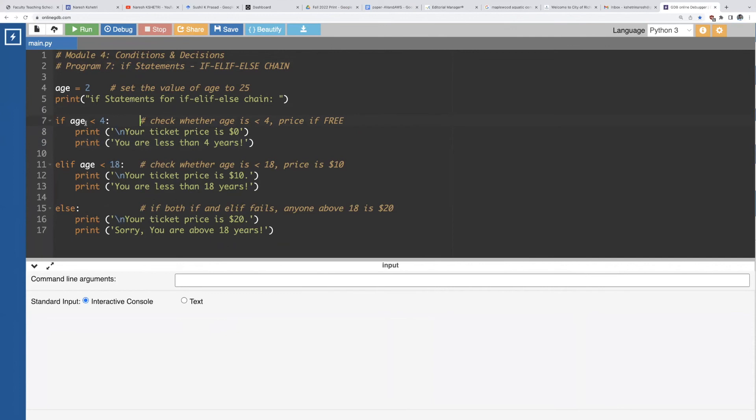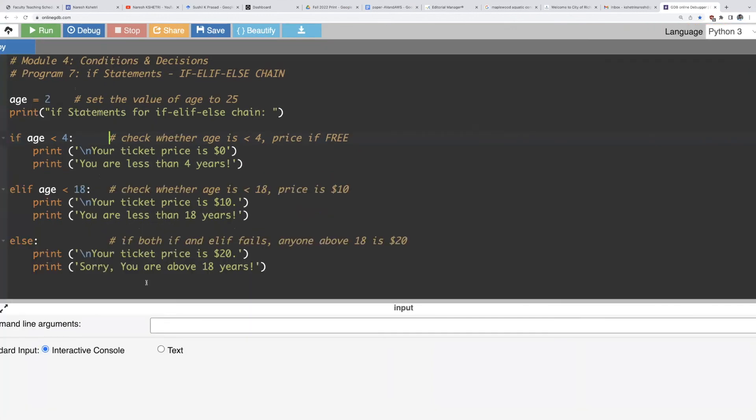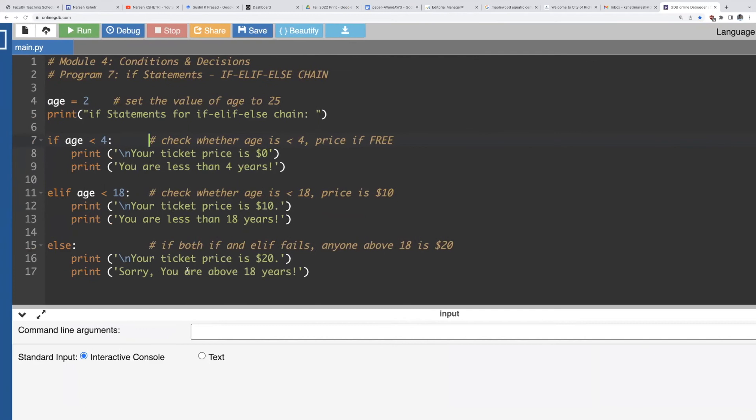So we have set the age value as two in the beginning you can set to any number but just to check the condition and trying to print some messages depending on the age.